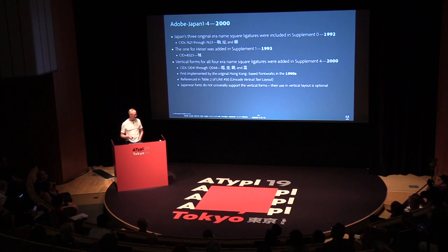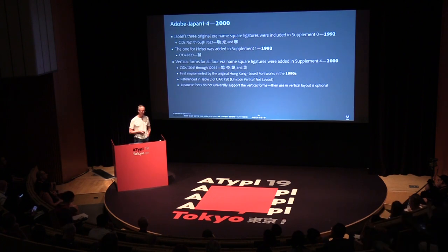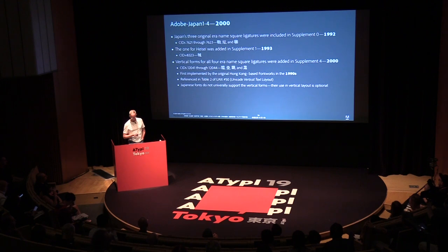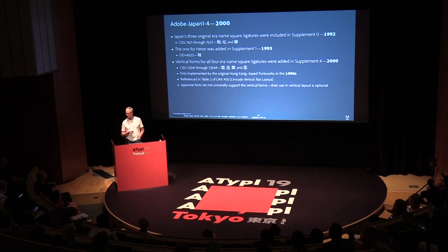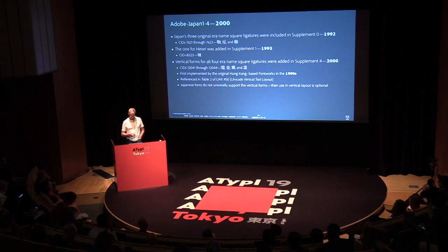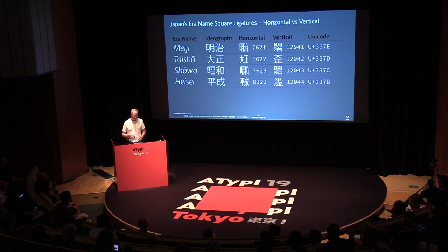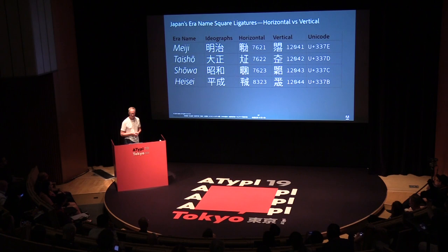What a lot of people don't know, including apparently people at Fontworks today, is that these vertical forms were first implemented in the original fonts made by the Hong Kong-based Fontworks, which served as the inspiration for putting them into supplement four. These vertical forms are referenced in Unicode Standard Annex Number 50, which covers Unicode vertical text layout. Japanese fonts do not universally support vertical forms — it's perfectly okay to issue a Japanese font without them.